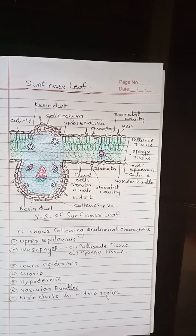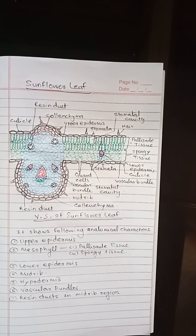Below the Upper Epidermis and above the Lower Epidermis, Mesophyll Tissue is present. The Mesophyll Tissue is differentiated into Palisade Tissue and Spongy Tissue.